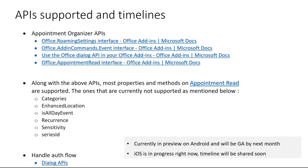Moving on, in terms of the APIs that we are supporting, we have the appointment organizer APIs supported for this scenario — roaming settings, add-in command surface, display dialog, et cetera. We'll be publishing the details and the full list of these APIs, but essentially all the methods on the appointment read surface will be supported, apart from categories, enhanced location, holiday, event, recurrent, sensitivity, and series ID. For auth, the display dialog APIs will be supported to manage the auth.